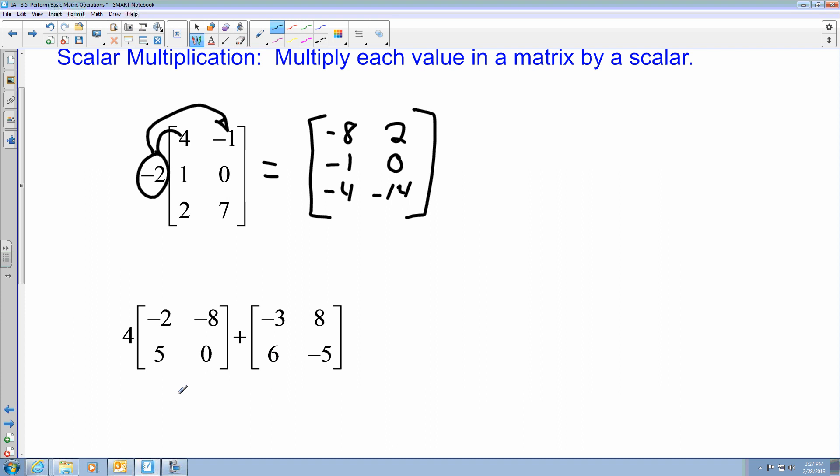When I have to do both addition or subtraction with scalar multiplication, you must keep in mind order of operations. So I need to multiply by 4 to this matrix before I add both matrices together. So this ends up equaling negative 8, negative 32, 20, and 0. And then I can add it to the negative 3, 8, 6, and negative 5. Which then gives me my final matrix result would be negative 11, negative 24, 26, and negative 5.